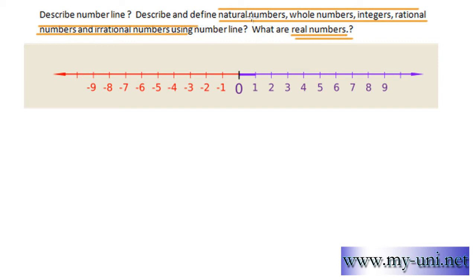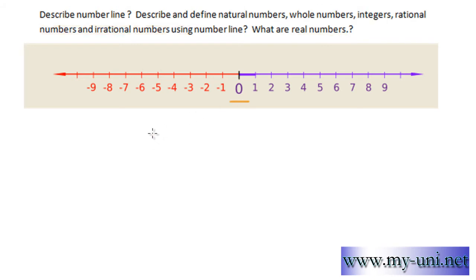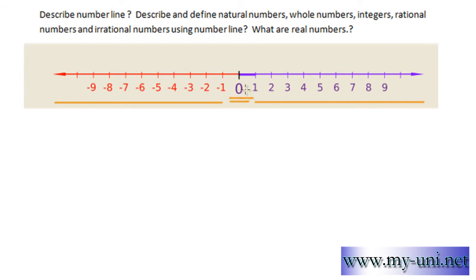The number line also has zero as a central point. It has negative numbers to the left of zero and positive numbers to the right of zero. Zero is neither negative nor positive. The magnitude or value of a number is represented by its distance from zero, and the value of numbers increases in the positive direction.